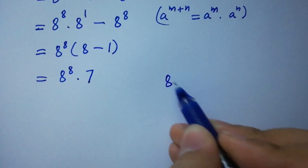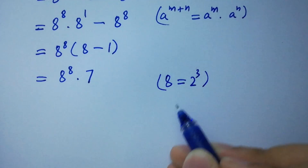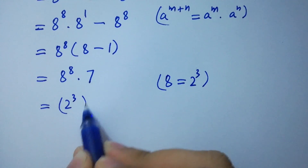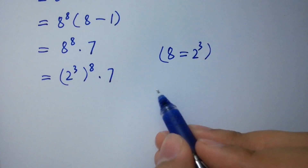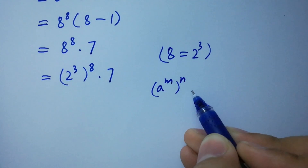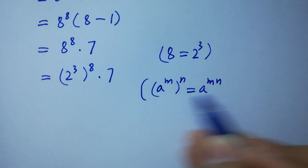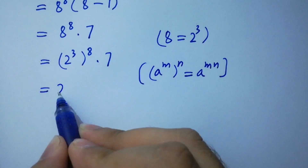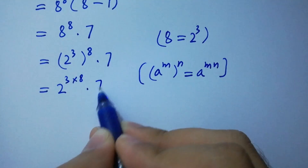As 8 equals 2 cubed — 2 times 2 is 4, 4 times 2 is 8 — we have here 2 cubed to the power 8 times 7. Using the rule a to the power m to the whole power n equals a to the power m×n, we have here 2 to the power 3 times 8 times 7.